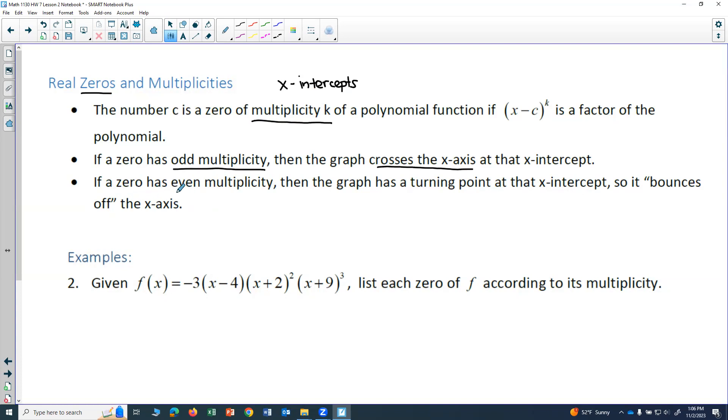If a zero has an even multiplicity, then the graph has a turning point at that x-intercept. So it would bounce off the x-axis.